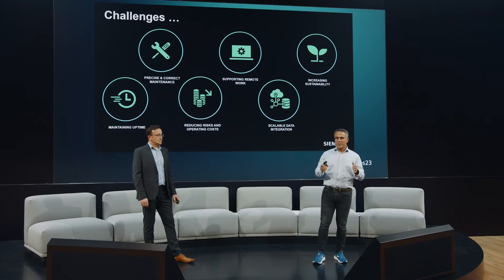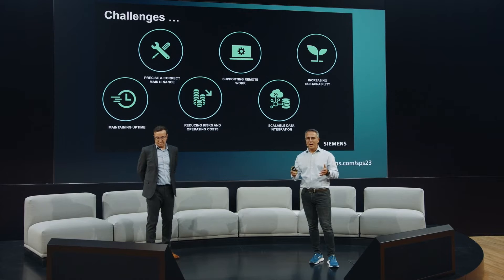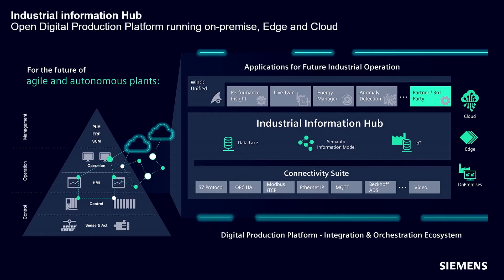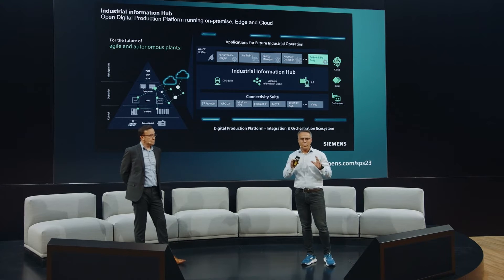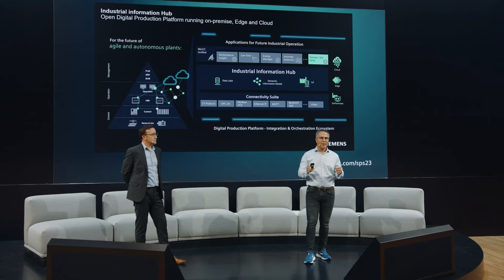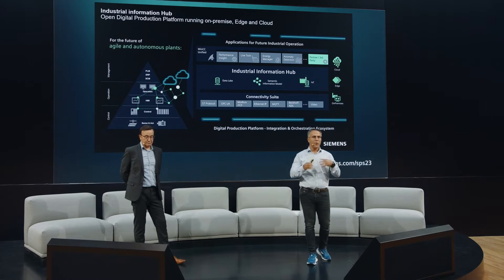We have to address these challenges for our customers, and our answer is the Industry Information Hub. The Industry Information Hub is an open ecosystem for agile and autonomous plants. It is integrated into your communication setup and can also work compatibly with third-party systems. The central element is the integration layer — an integration system for all value-added applications. Overall, the Industry Information Hub is the one-stop solution for your data management.